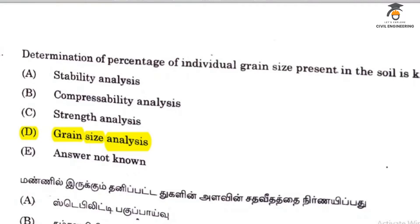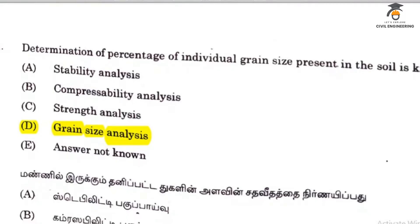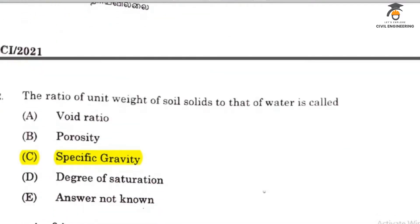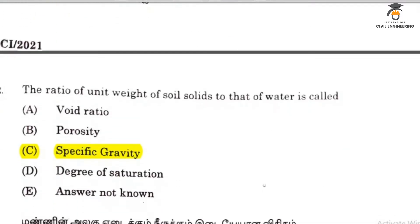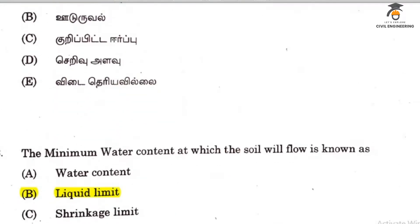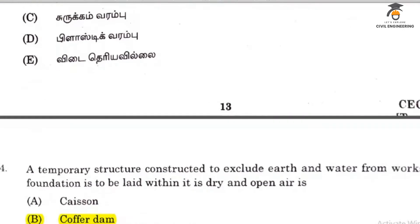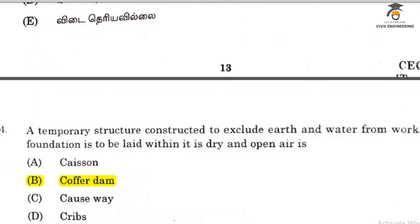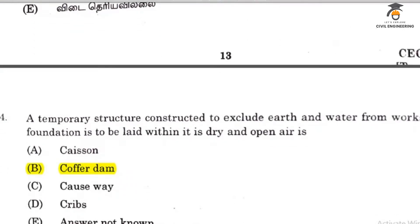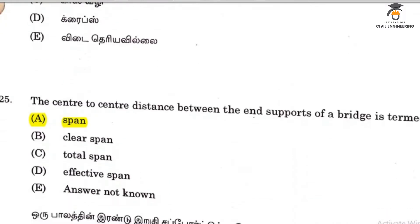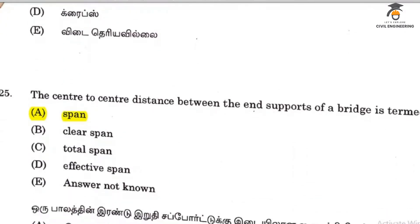Determination of the percentage of grain size. The ratio of unit weight of soil solids to water is the specific gravity. The minimum water content at which the soil will flow is the liquid limit. A temporary structure constructed to exclude earth and water for underground foundation is called a coffer dam. The center-to-center distance between the ends of the bridge is the span.